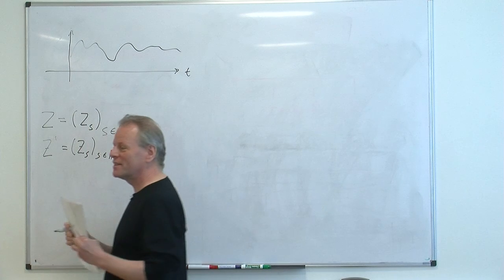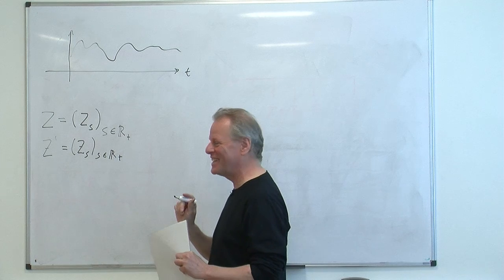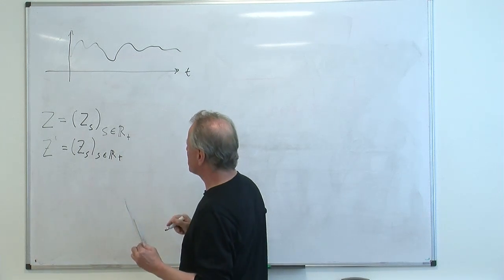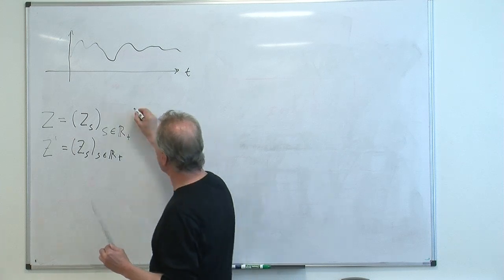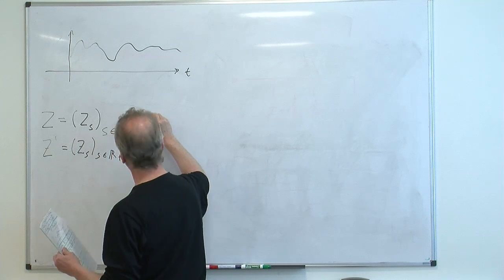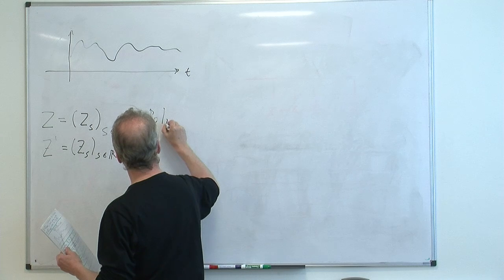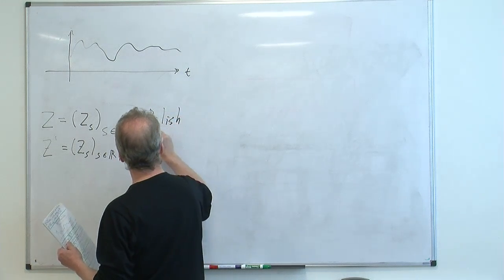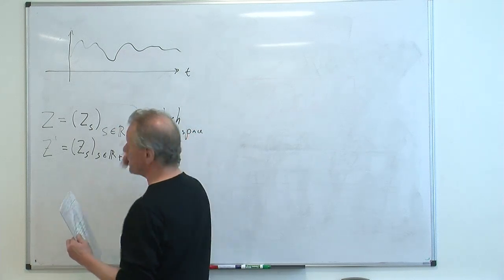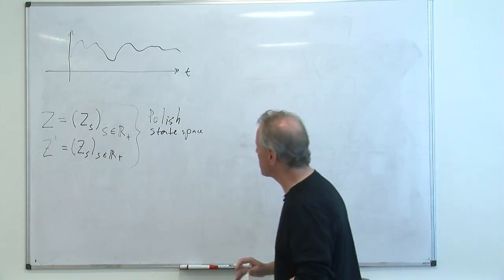I am, of course, starting with the third slide. I have something I wanted to do before this, but let's do this preparation. So they are going to be processes on a Polish state space. So it means that the state space is complete and separable. You can think of the real line — that's fine — or D-dimensional Euclidean space.